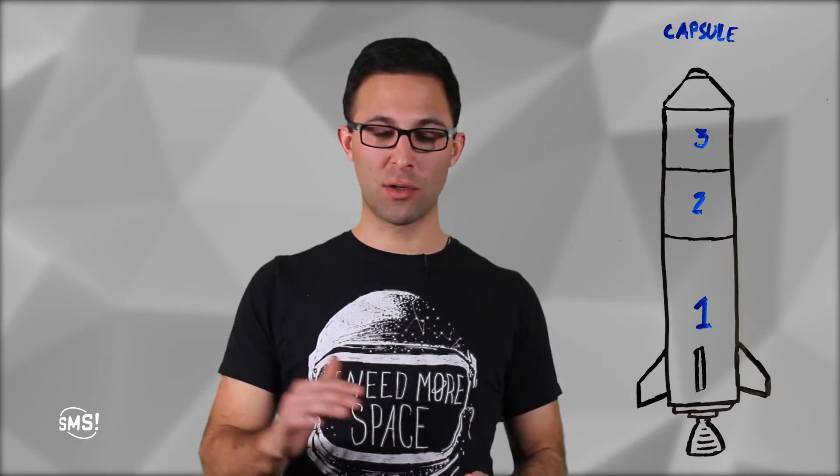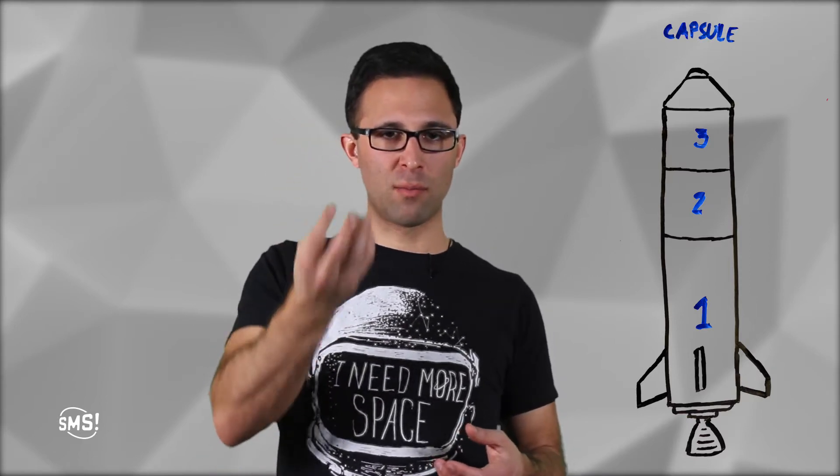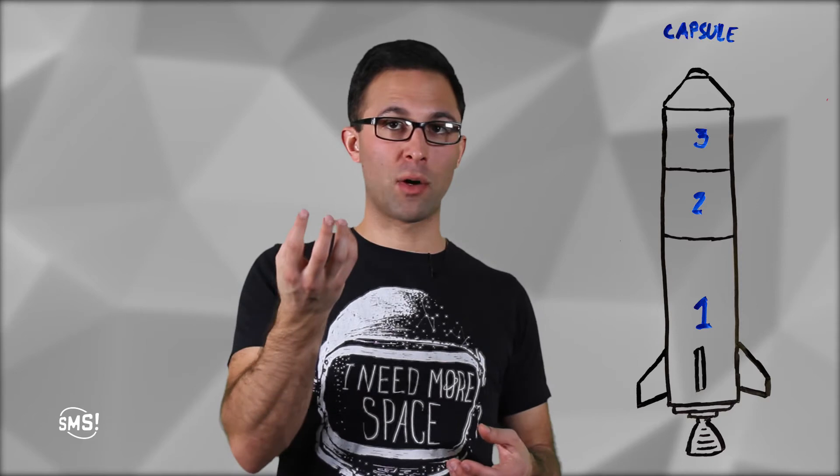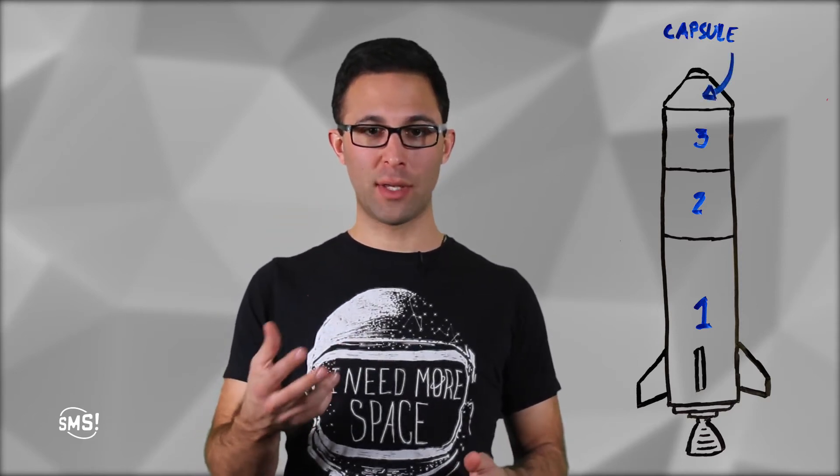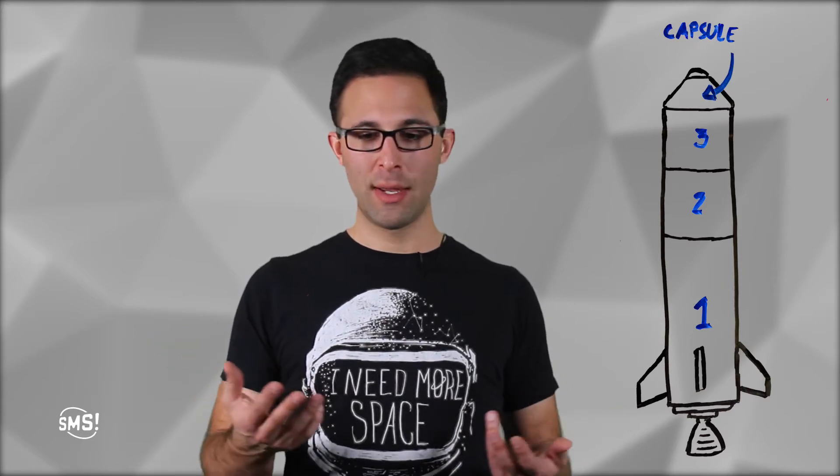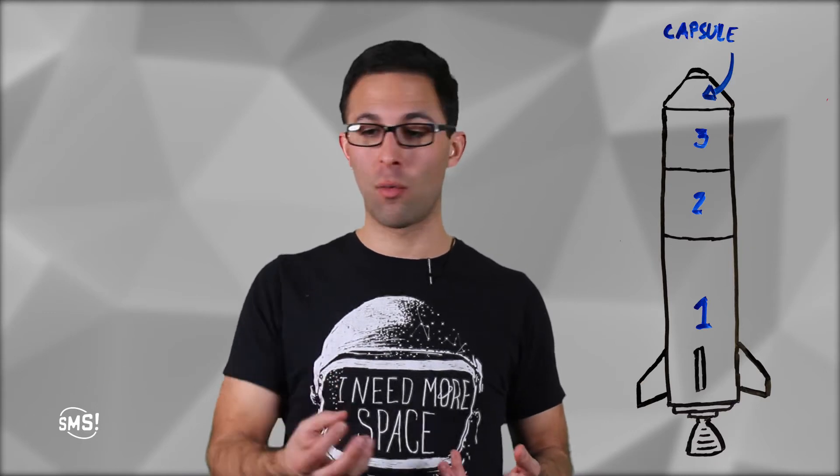Then above that, you have the second stage, and then you keep going. A second, and then probably a third stage above that, that end up being smaller and optimized for where they're going to be operating. On top is the capsule, and the capsule here is the payload. That's the reason the whole rocket exists, to get that capsule where it needs to go.